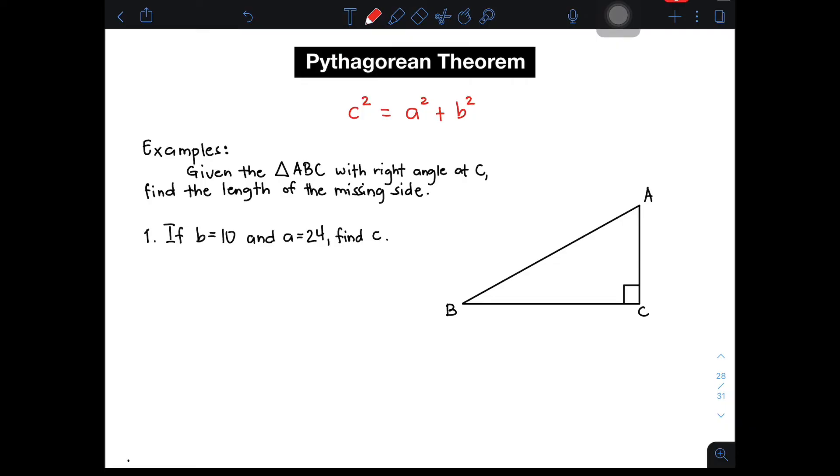Now, let us use the formula C squared is equal to A squared plus B squared in solving these problems. We have here examples. Given the triangle ABC with right triangle at C, find the length of the missing side. In number one, we have B is equal to 10, and A is equal to 24, find C. So, we have here this given right triangle on the right side of our screen, wherein you have here angle A, angle B, and your angle C as your right angle.